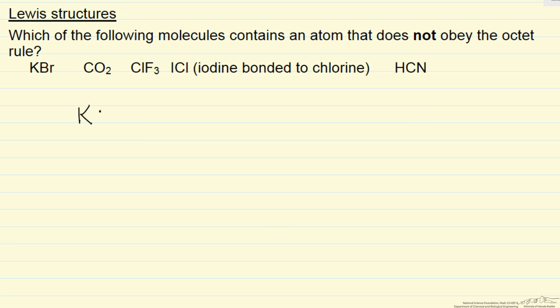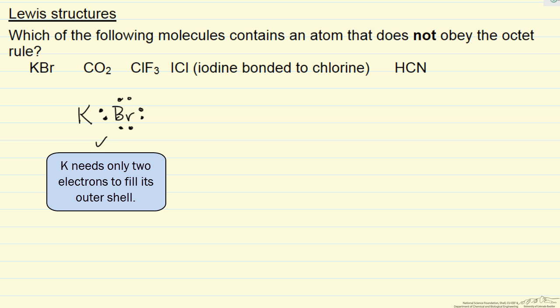For potassium we know we have one valence electron and for bromine we have seven, so we can satisfy the octet rule for the bromine. Potassium has two electrons.